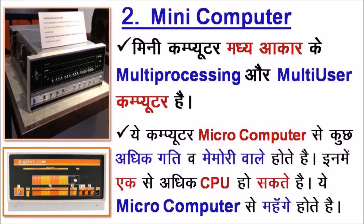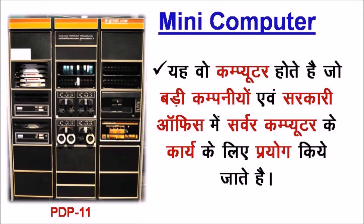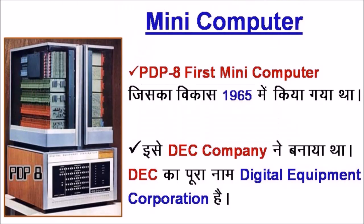दूसरा है Mini Computer — Mini Computer मध्यम आकार के Multiprocessing और Multi-User Computer हैं। ये Computer Micro Computer से कुछ अधिक गति और Memory वाले होते हैं। इनमें एक से अधिक CPU हो सकते हैं। ये Micro Computer से महँगे होते हैं। ये वो Computer होते हैं जो बड़ी कंपनियों एवं सरकारी Office में Server Computer की कार्य के लिए प्रयोग किये जाते हैं। PDP-8 First Mini Computer है, जिसका विकास 1965 में किया गया था। इसे DEC Company ने बनाया था — DEC का पूरा नाम है Digital Equipment Corporation।